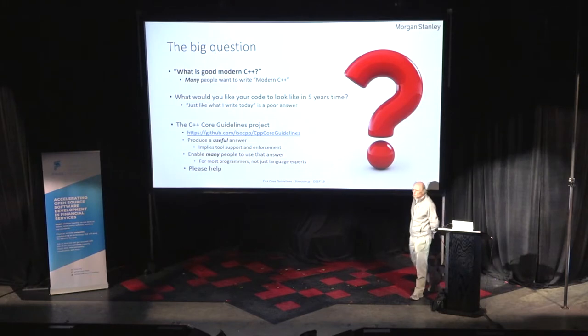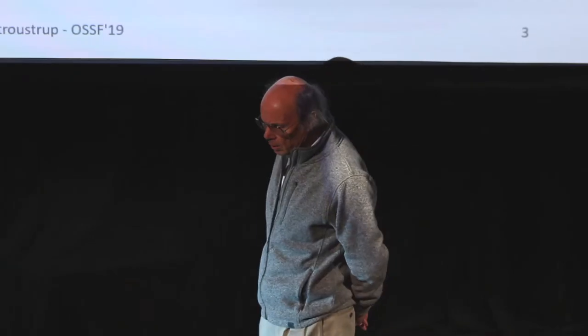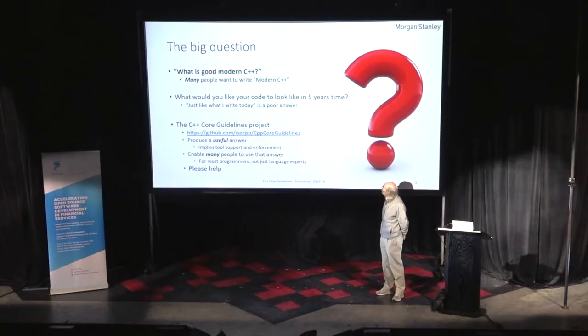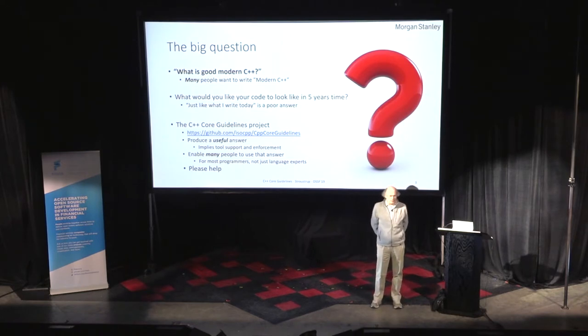A few years ago I realized a lot of people would like to write more modern C++. They had gotten convinced that that was a good thing for both their reliability and their performance, but they didn't know how. They got lost in the feature set. You go on the web and you get every possible advice. So I said, well, what's modern C++? How would you like your code to look in five years?